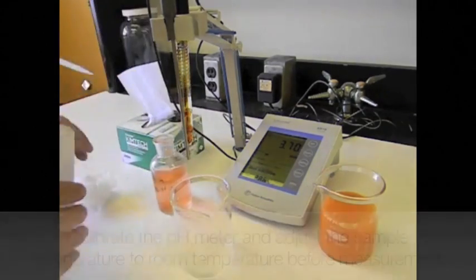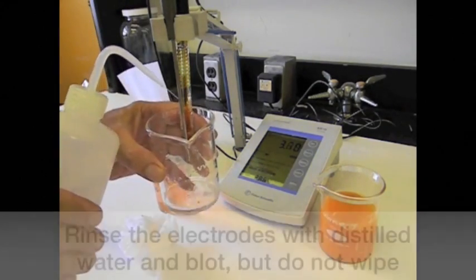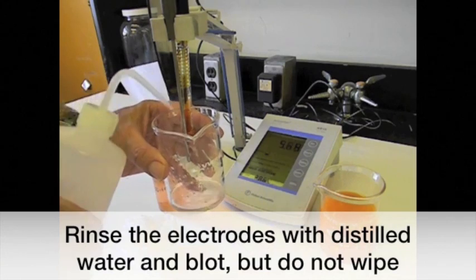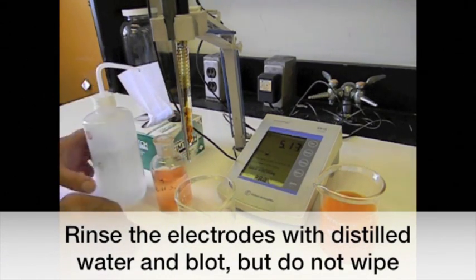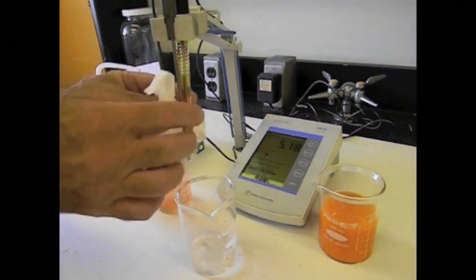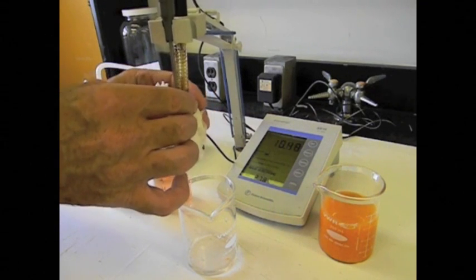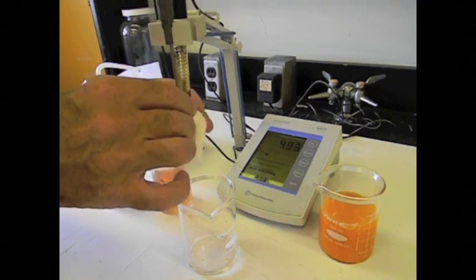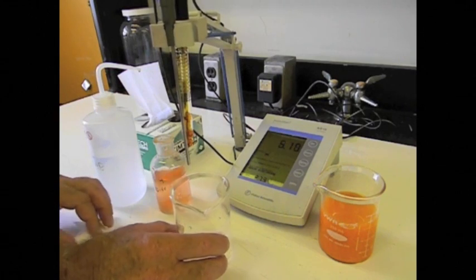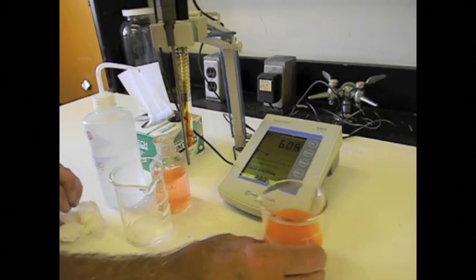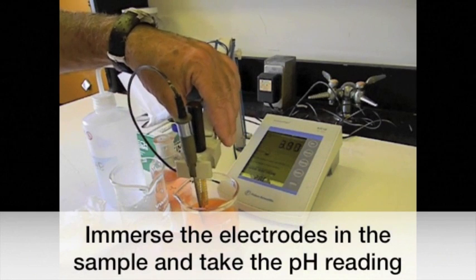Calibrate the pH meter and adjust the sample temperature to room temperature before measurement. Rinse the electrode with distilled water and blot. Do not wipe. Immerse the electrode in the prepared sample and take the pH reading.